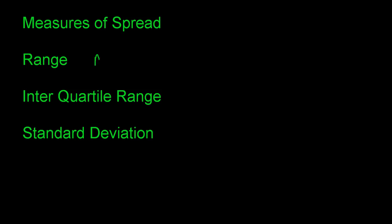There are three measures of spread, which describe how your data is spread out. The range is very simple — it's just your max minus your min. Even if the max or min are outliers, they're still counted, so it's literally your biggest value minus your smallest value.